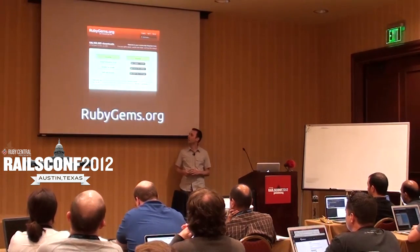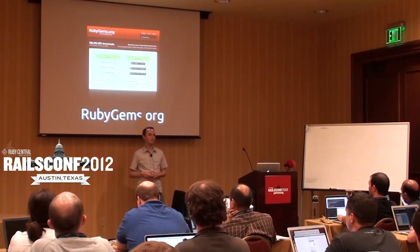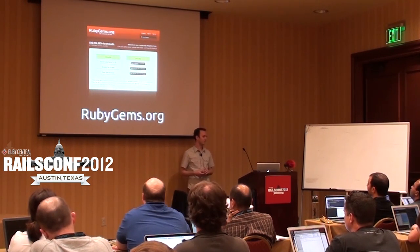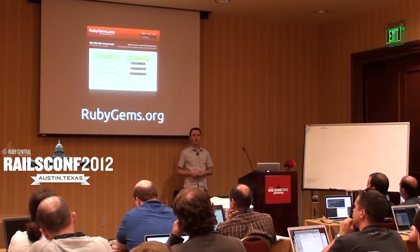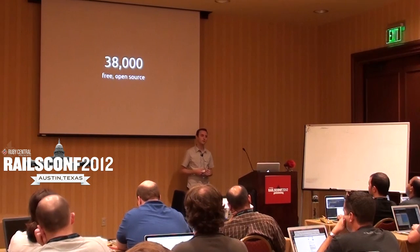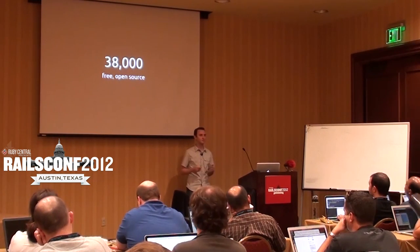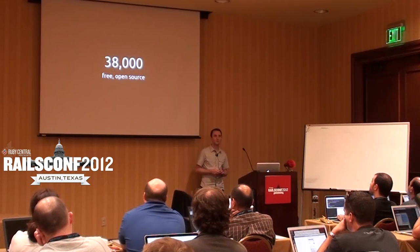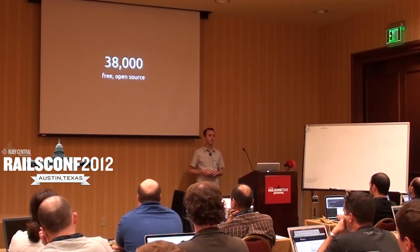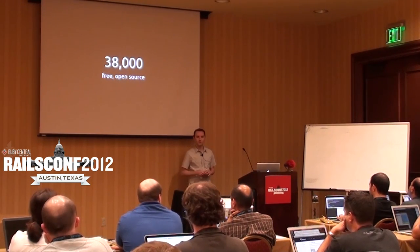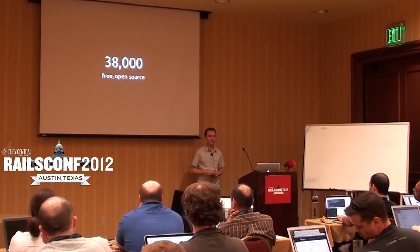So, finding gems. RubyGems, since everybody here knows what it is, is hosted at RubyGems.org. Right now there are somewhere around 38,000 gems. By and large, anything you might think you need to do has probably been done to some level. These are generally free and open source by nature of RubyGems — it is kind of open source at some level, regardless of whether it's on GitHub or not.